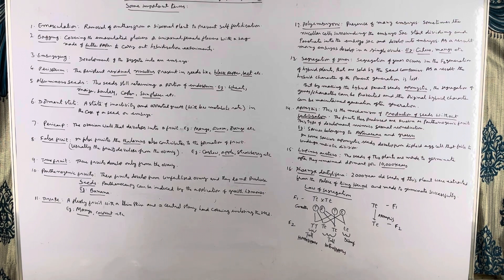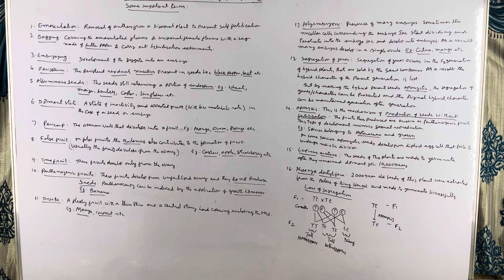Drupe is a fleshy fruit with a thin skin and a central stony hard covering enclosing the seed. Examples of drupe include mango, coconut, etc.